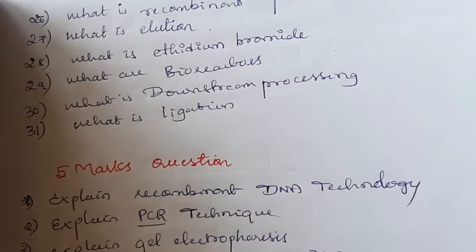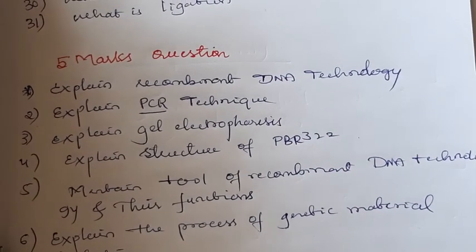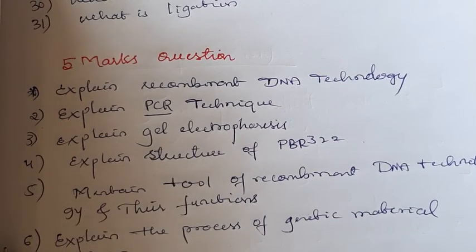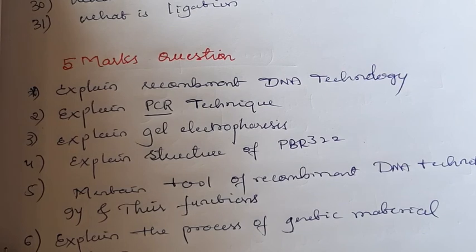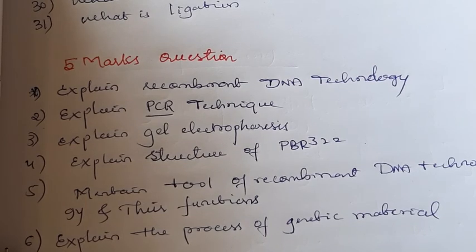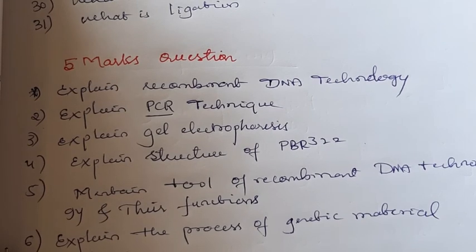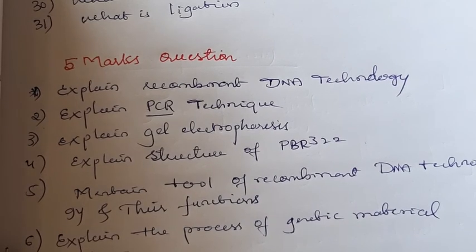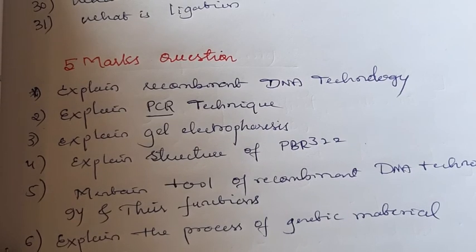Now the 5-mark questions. First: explain recombinant DNA technology. You have to explain each and every step, and if possible draw the diagram also to get full marks. You have to mention the steps: isolation of DNA, isolation of plasmid, digestion, gel electrophoresis, transformation, and finally downstream processing. Explain in detail with the diagram.